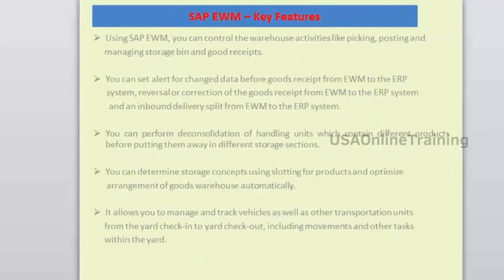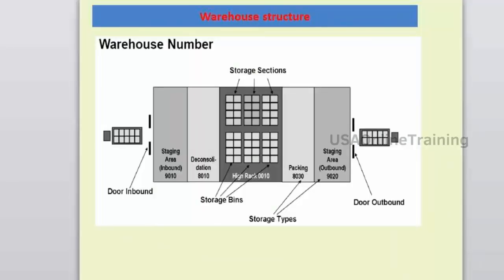This is a simple warehouse structure. Any warehouse has inbound doors — trucks arrive and unloading of products takes place at the inbound door. After unloading, you don't take products directly to the final storage bin. There is an interim storage area called a staging area where you keep the products first, for packing or unpacking.